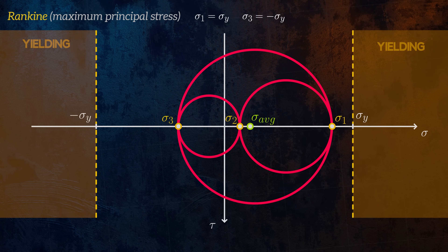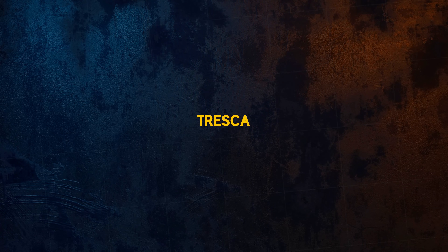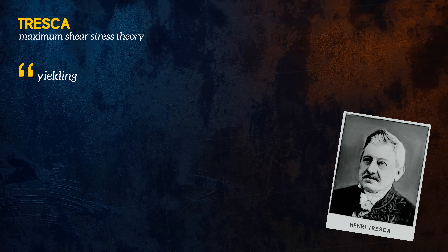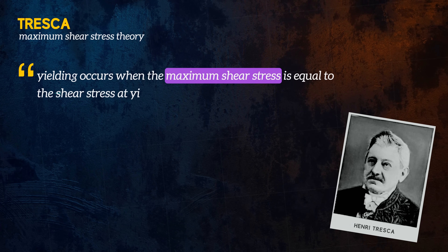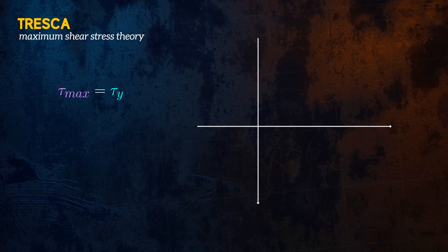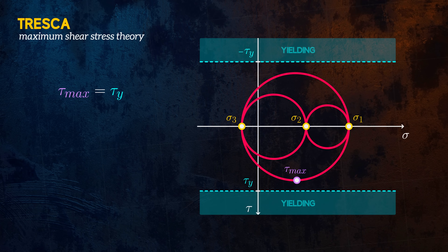Two failure theories which are consistent with this observation are the Tresca and von Mises failure criteria. These are the two most commonly used failure theories for ductile materials. The Tresca failure criterion, also called the maximum shear stress theory, is named after the French engineer Henri Tresca. It states that yielding occurs when the maximum shear stress is equal to the shear stress at yielding in a tensile test. This can be defined mathematically and graphically using Mohr's circle. This theory is consistent with the observation that hydrostatic stresses don't affect yield — it doesn't care where Mohr's circle is located on the horizontal axis.